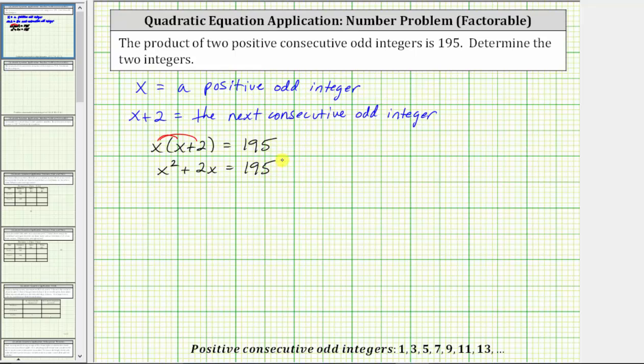Notice how we have a quadratic equation. To solve the equation by factoring, the next step is to set one side of the equation equal to zero. Let's set the right side equal to zero by subtracting 195 on both sides of the equation. Simplifying, on the left we have x squared plus two x minus 195 equals on the right side, the difference is zero.